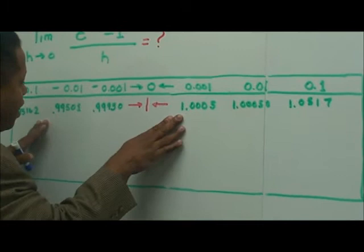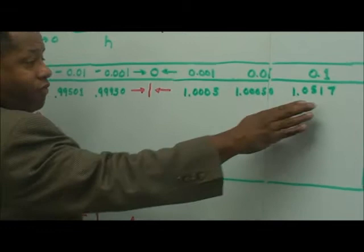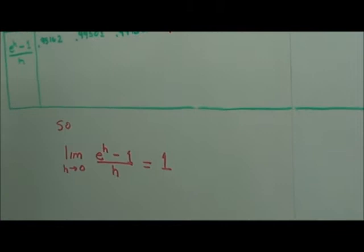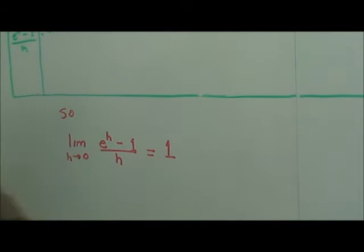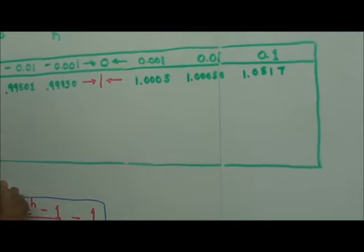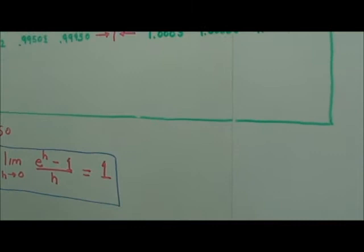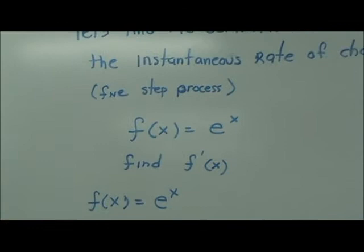From the left-hand side it's getting closer and closer to 1, and from the right-hand side, closer and closer to 1. So the limit of e to the h minus 1 over h as h approaches 0 is 1. This is essentially a theorem. Let's do a problem using the difference quotient — the instantaneous rate of change using the five-step process.